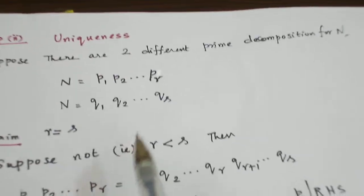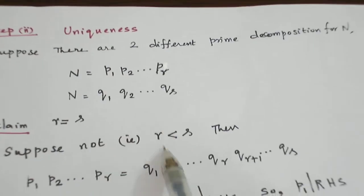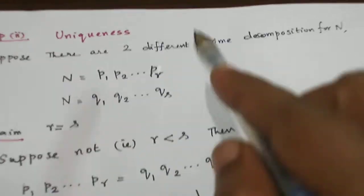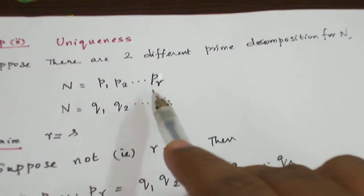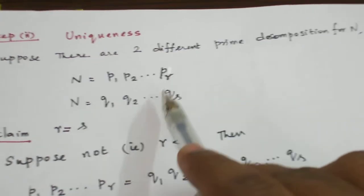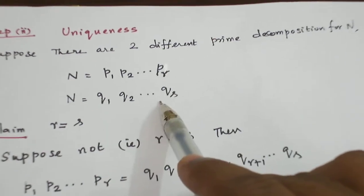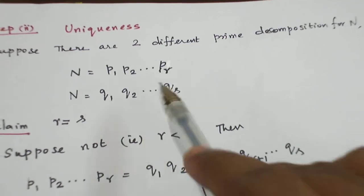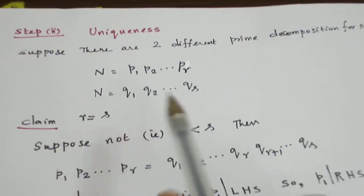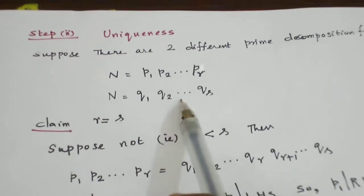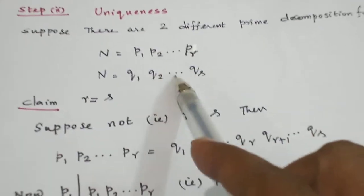Suppose not — suppose r < s, meaning here we have fewer prime numbers on the left and more prime numbers in the second factorization. We should then get a contradiction. Since the left-hand sides are equal, the right-hand sides must be equal.